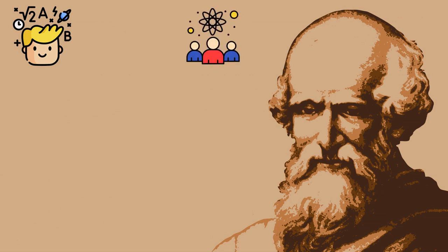Archimedes was the most brilliant mathematician of his time. He was also a physicist, engineer, astronomer, and inventor.